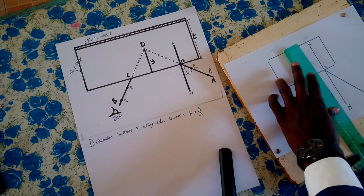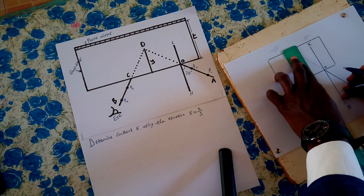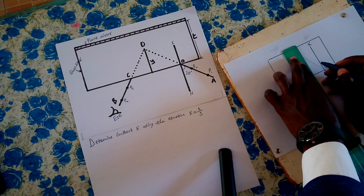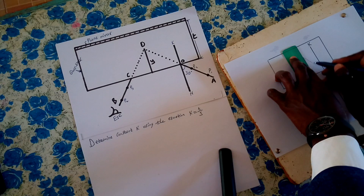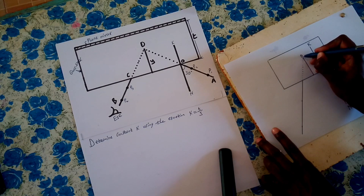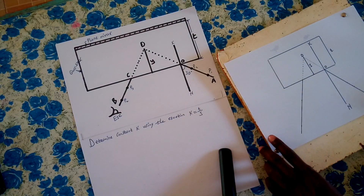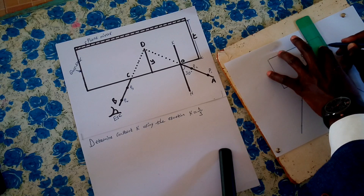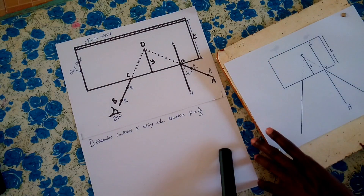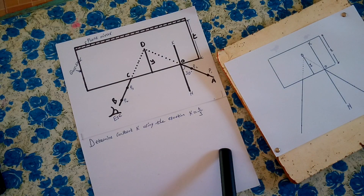From there we draw the normal through point Y. This is now point D, and this is height Y. This distance here is T — you can identify this distance from here up to here. That is distance T. We are told to measure the lengths and then determine the constant K, given that K is T over Y.